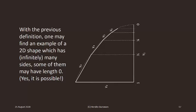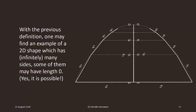With the previous definition, one may find an example of a 2D shape which has infinitely many sides. Some of them may have length 0. Yes, it is possible. Just observe the construction of such a shape here. The point on the tip is an equivalent class, but consists of only one point. So, we have a side of 0 length by our definition.